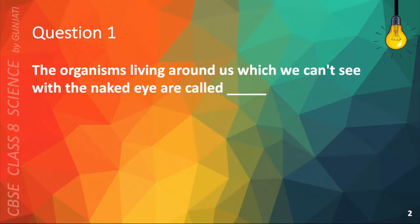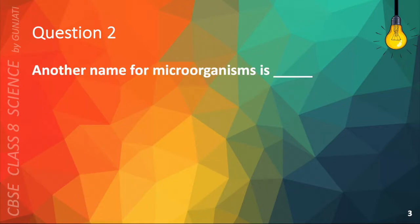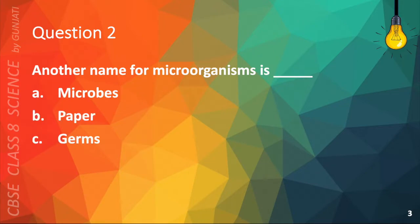Question 1. The organisms living around us which we can't see with the naked eye are called: A. Water, B. Animals, C. Air, or D. Microorganisms. The correct answer is D. Microorganisms. Question 2. Another name for microorganisms is: A. Microbes, B. Paper, C. Germs, or D. Air. The correct answer is A. Microbes.